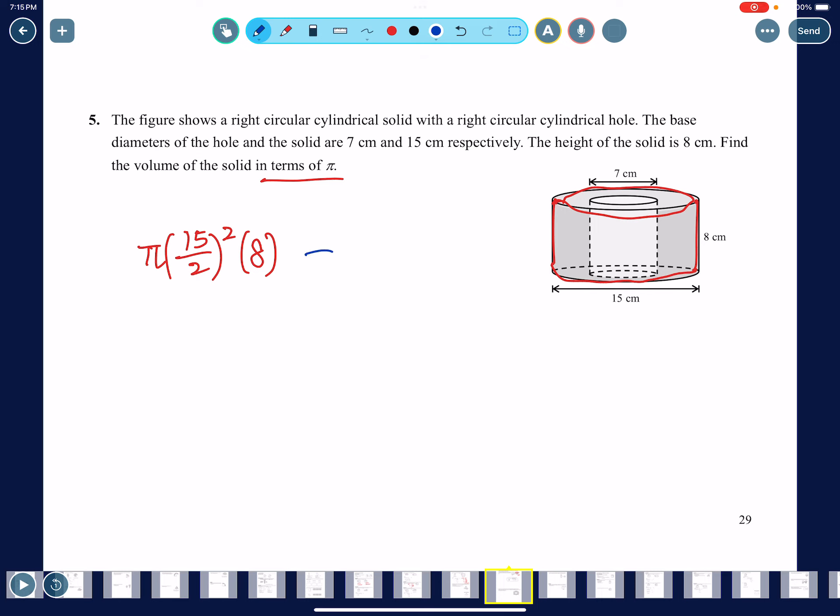Then you're going to subtract the hole that you drilled. So this is the hole. It has a diameter of 7, so π times 7 divided by 2, change it to radius, squared, times the height 8. So this should be the volume left, right? You can imagine this is the volume that's going to remain. In terms of π makes it more complicated, so we have 15 divided by 2 squared times 8 is 450, so we have 450π minus 3.5 squared times 8, which is 98π. So finally 450 minus 98 is 352π, the final answer, cm³.